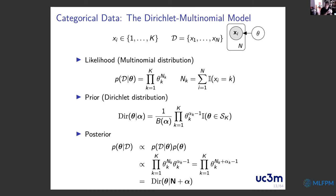For categorical data, we can use the multinomial distribution as the likelihood. We extend the beta prior to a Dirichlet distribution — a sort of multidimensional beta distribution. Using the Dirichlet as a conjugate prior, the posterior also belongs to the Dirichlet family with different parameters.